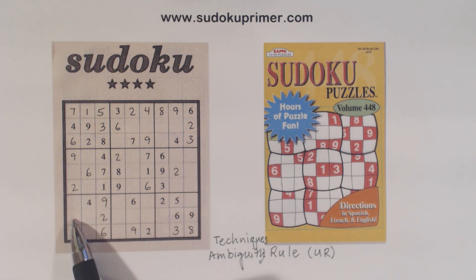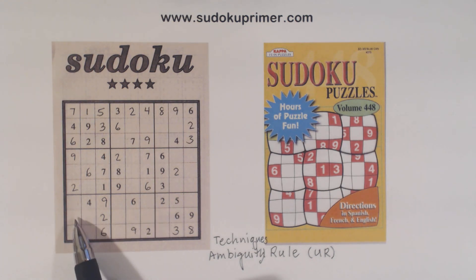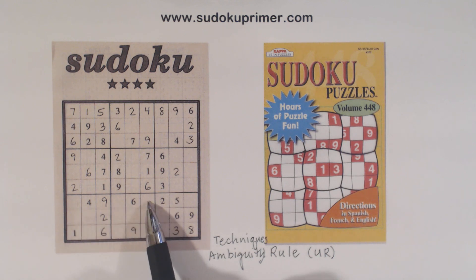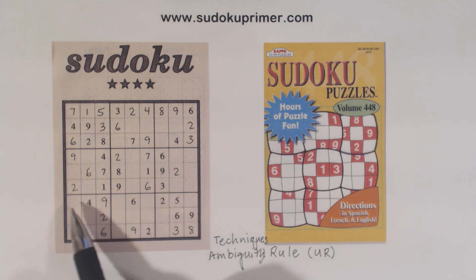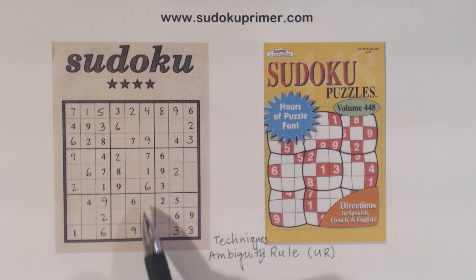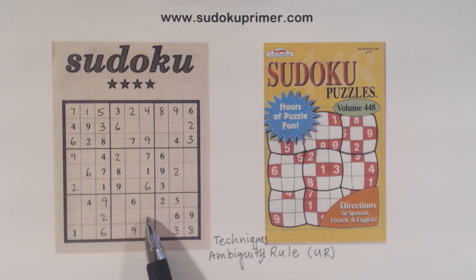If that's the case, then this has to be a 5 because it cannot be a 3 or an 8 because of the unique rectangles. So if we have 3-8, 3-8, 3-8, that has to be a 5. What if these were 3-8 twins here? Then we'd have 3-8 twins here and 3-8 twins here, so that would have to be a 5. So one of these cells we know is a 5.